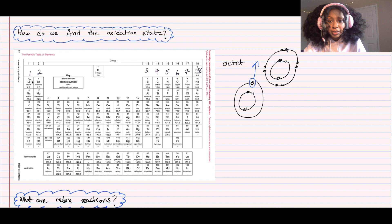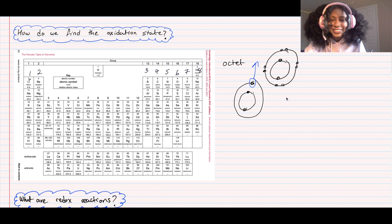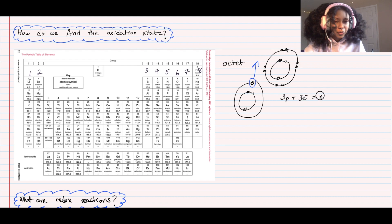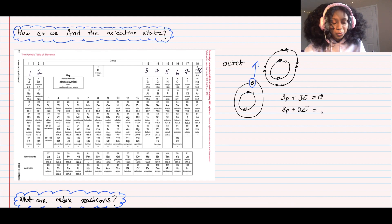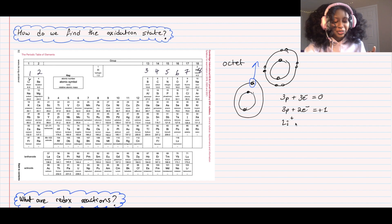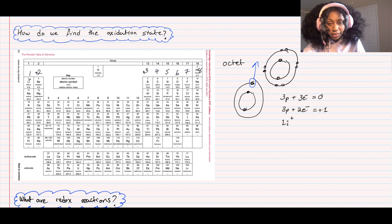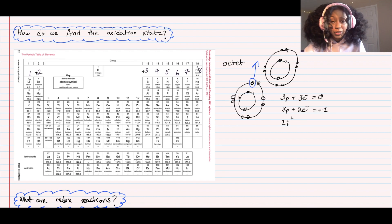Lithium has three protons and three electrons, giving an overall charge of zero. But once it loses one electron, you have three protons and only two electrons, giving a charge of positive one. That's why group one elements have a charge of +1. Group two has a charge of +2, group three +3. It's easier to lose a few electrons than to gain seven to complete the octet - metals tend to lose electrons, whereas non-metals tend to gain electrons.